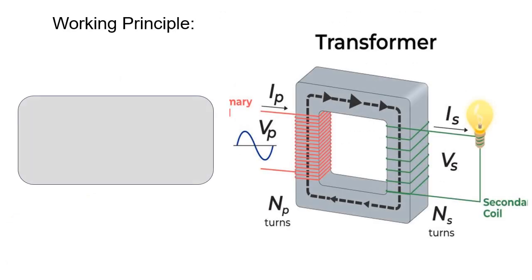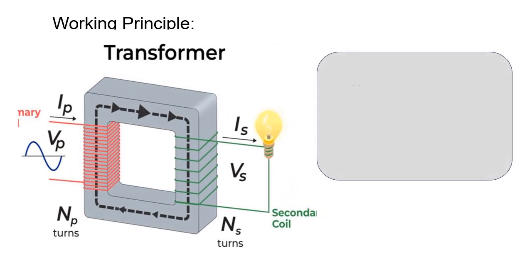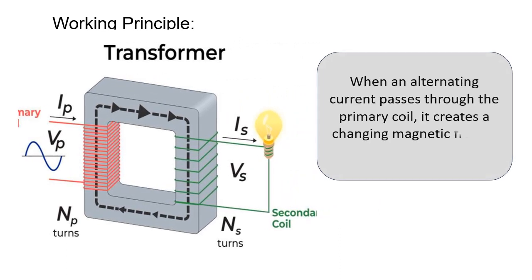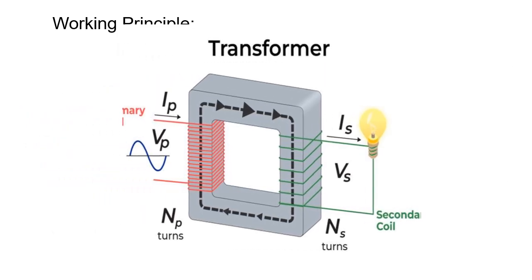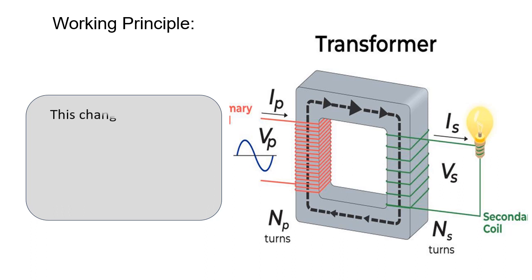Working Principle: Transformers work on the principle of electromagnetic induction. When an alternating current passes through the primary coil, it creates a changing magnetic field in the core. This changing magnetic field induces a voltage in the secondary coil,